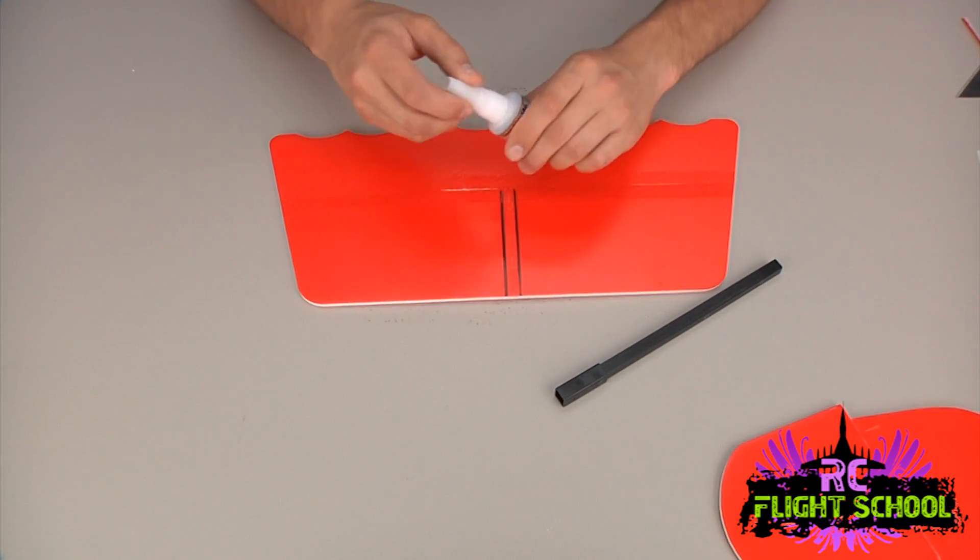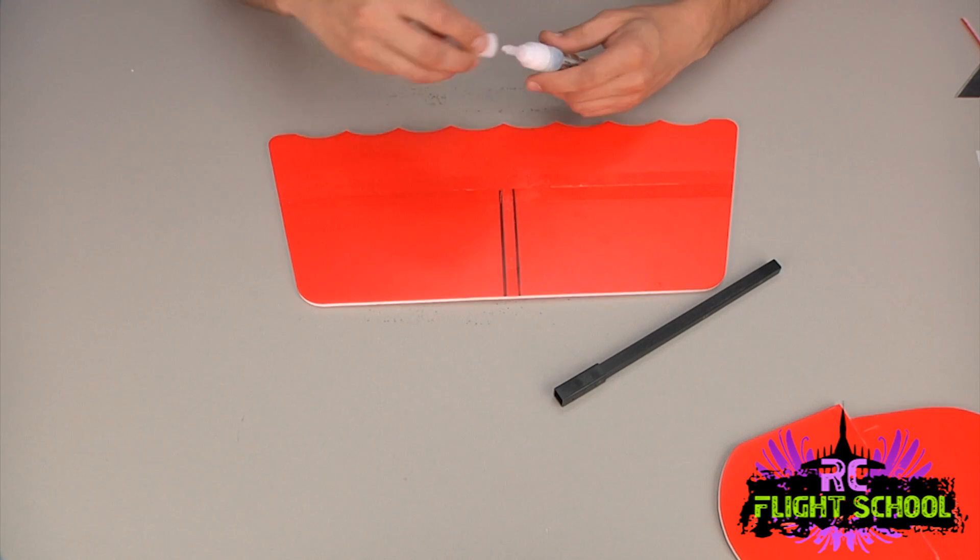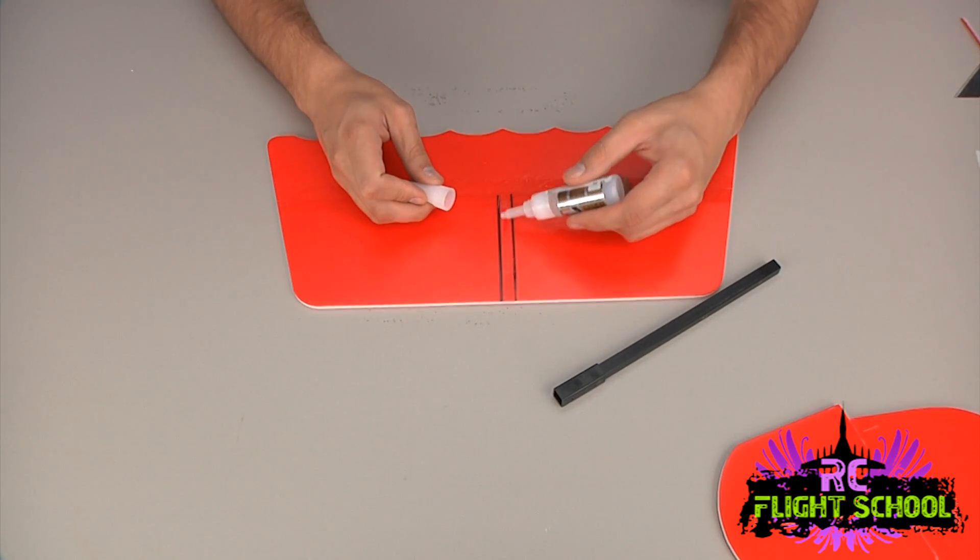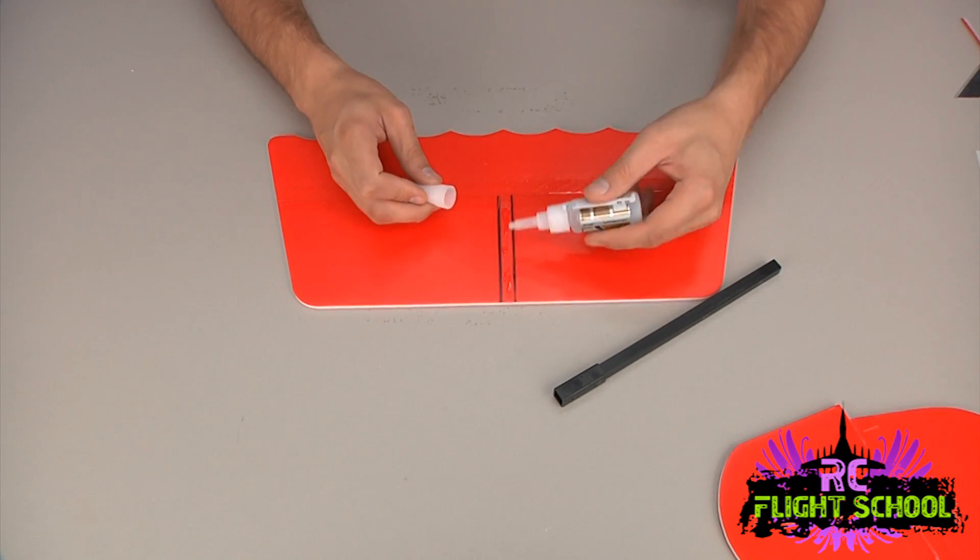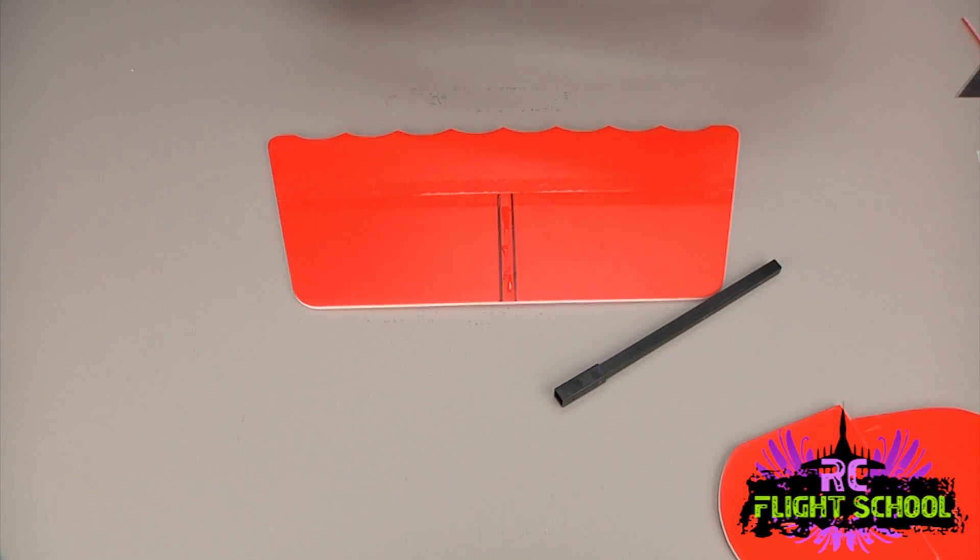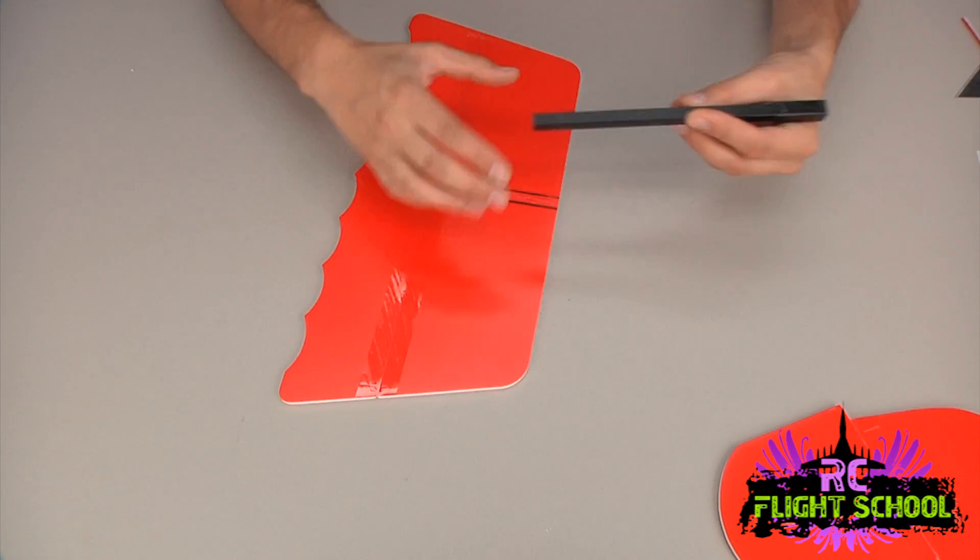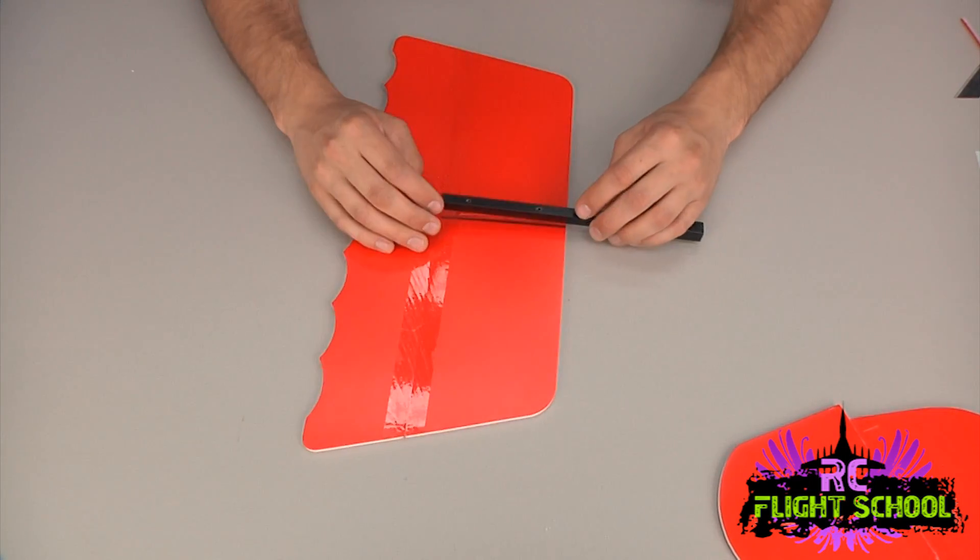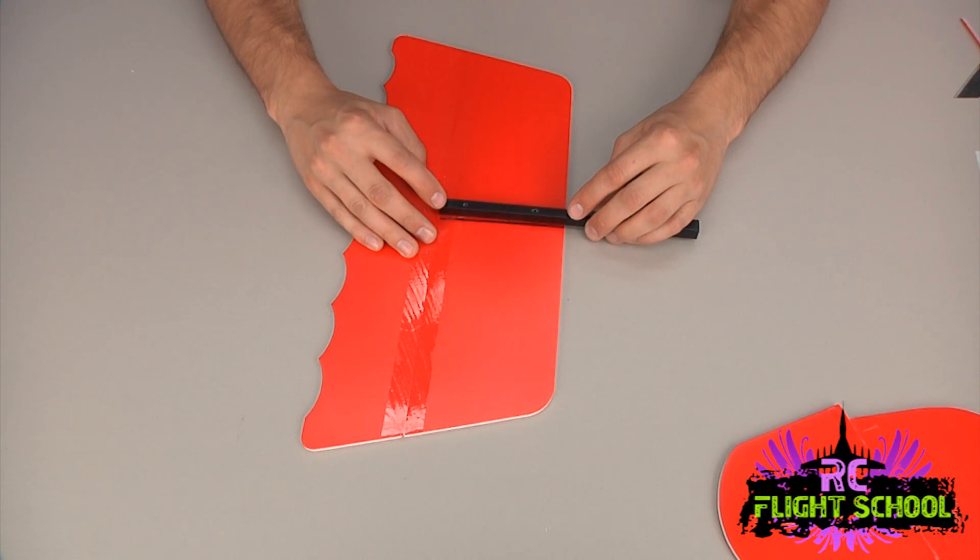You can do the same thing to the carbon fiber rod if you'd like as well. So all you do is take some of your foam safe glue, run a line, doesn't take much, down there like so. Grab our fuselage. Again that's just a stick.